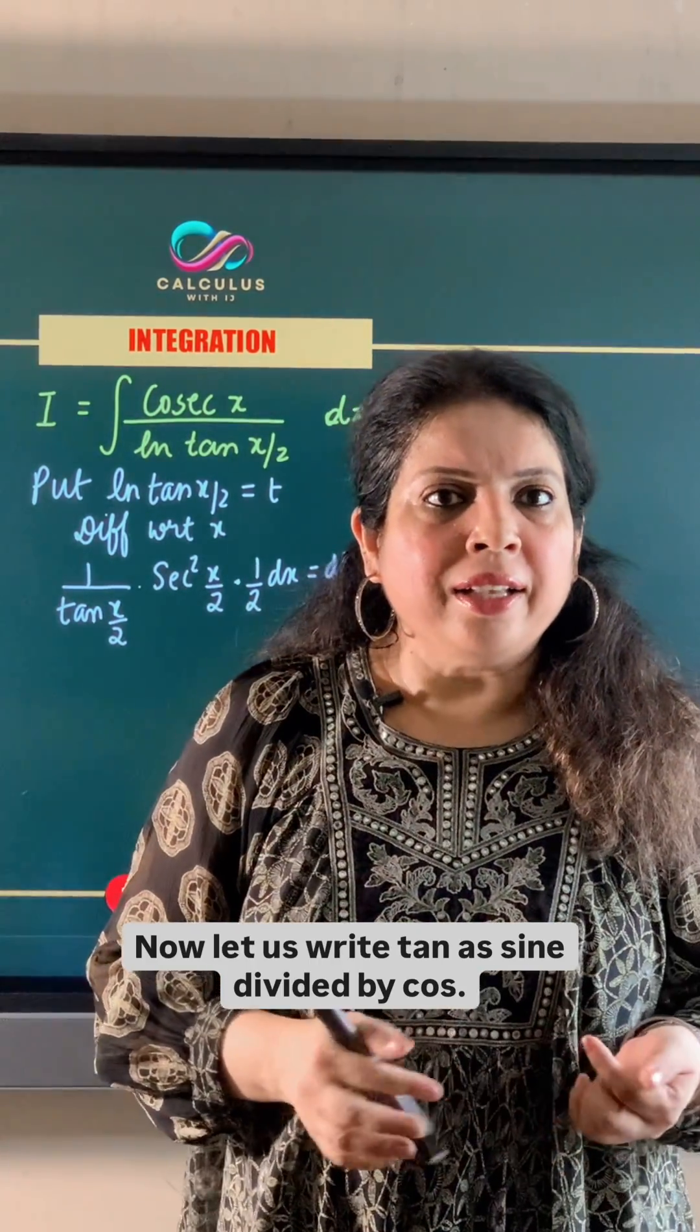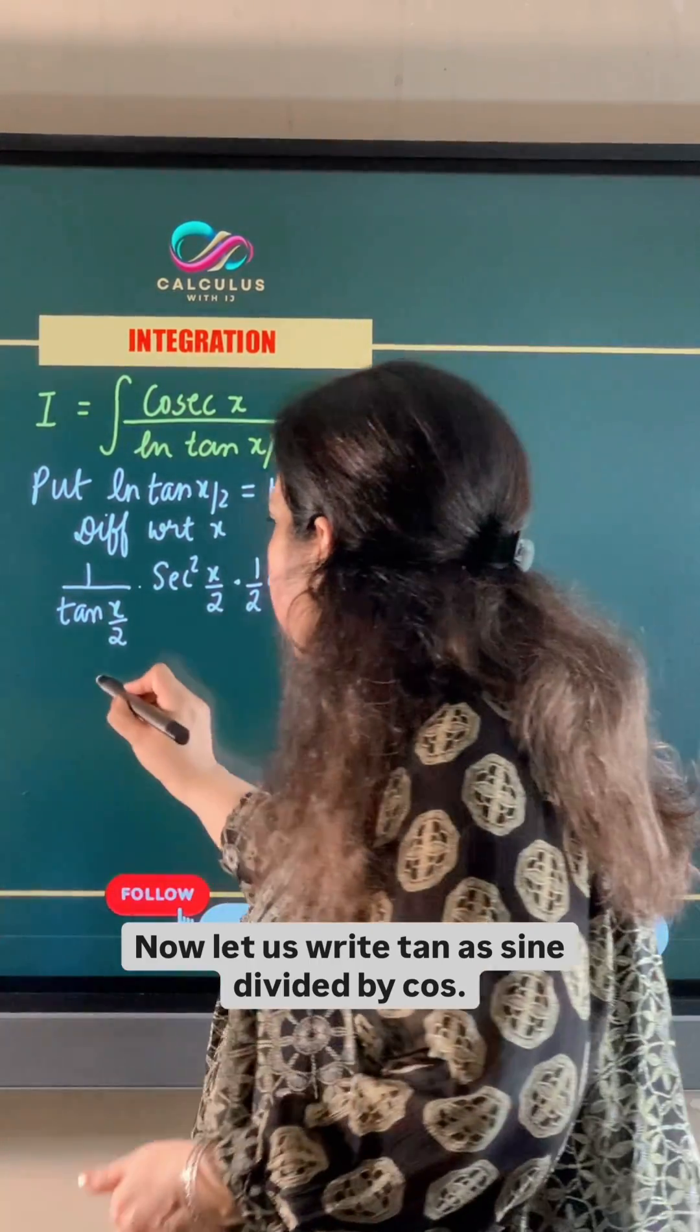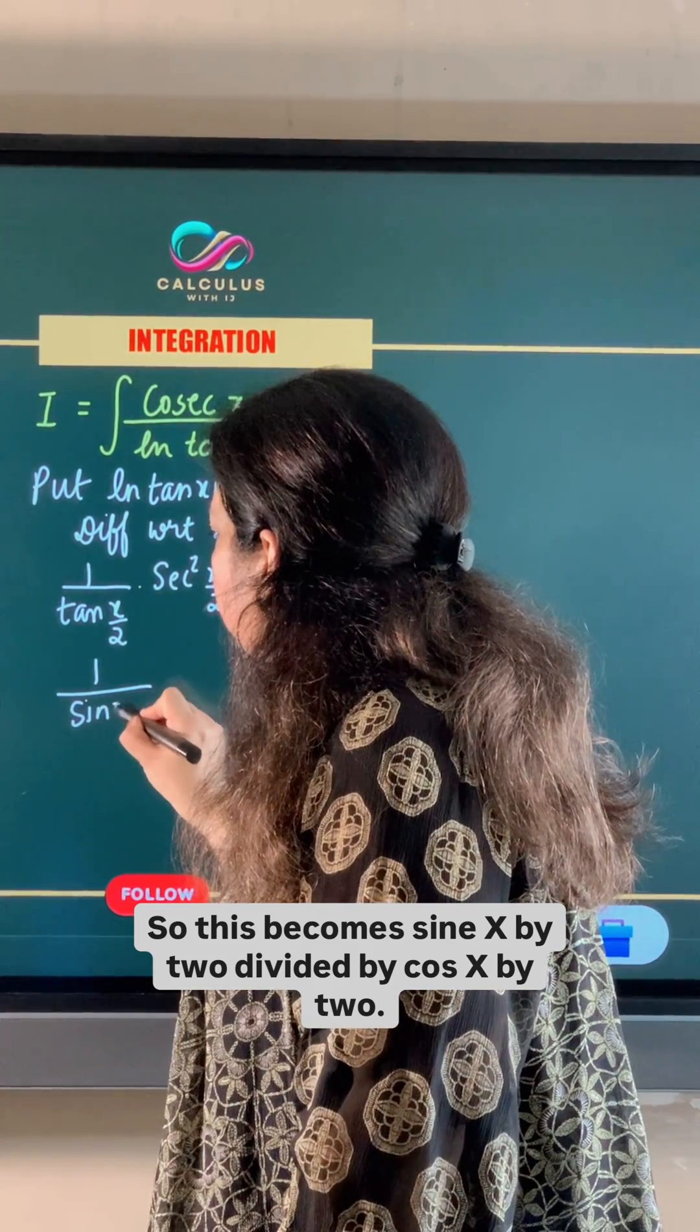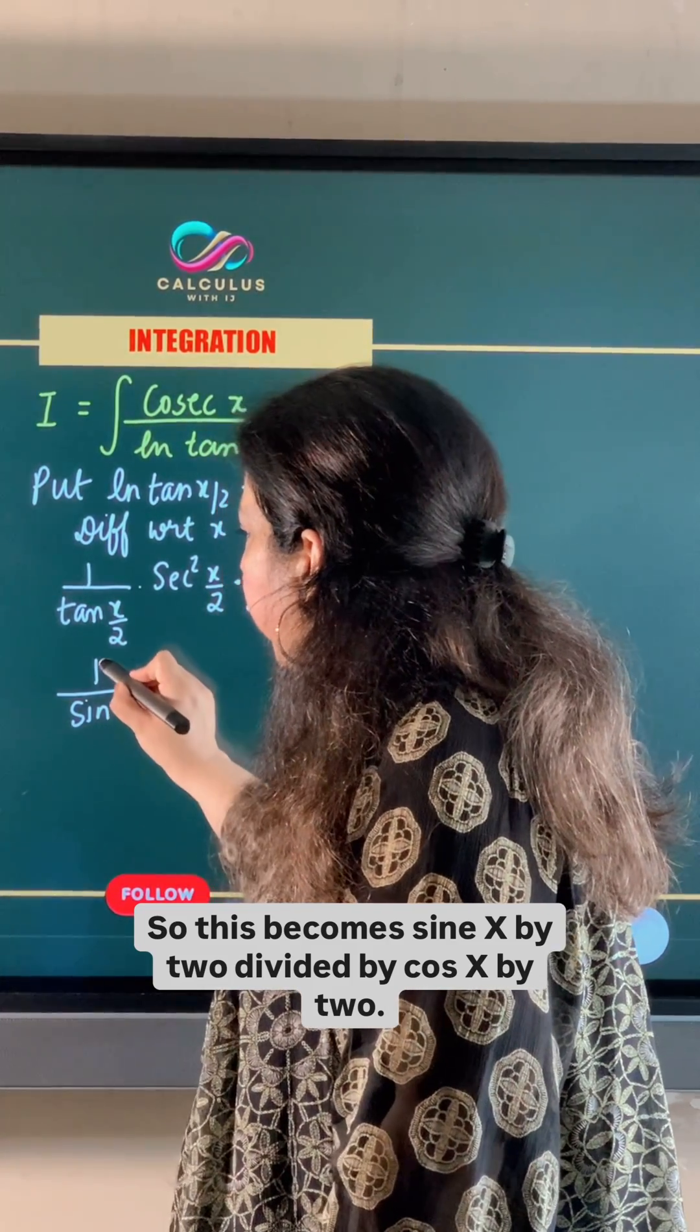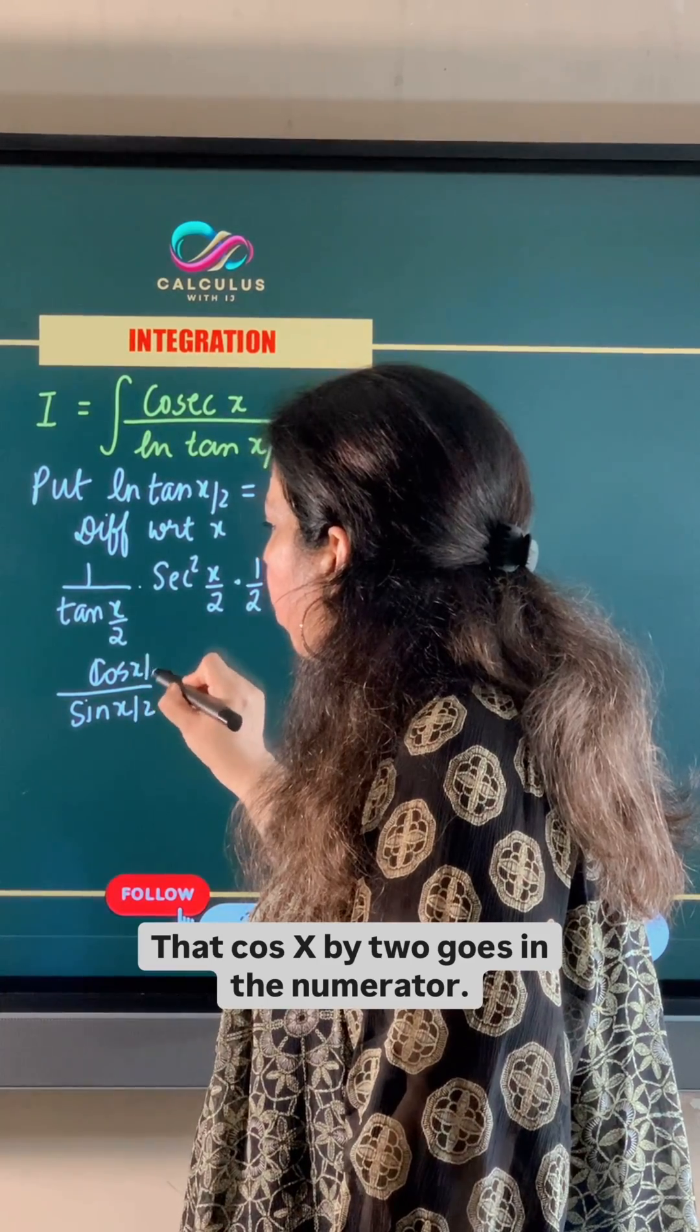Now, let us write tan as sin divided by cos. So this becomes sin x by 2 divided by cos x by 2. That cos x by 2 goes in the numerator.